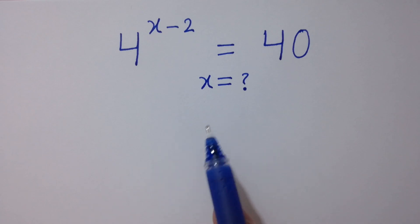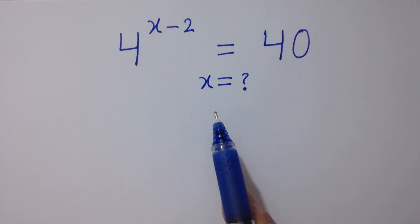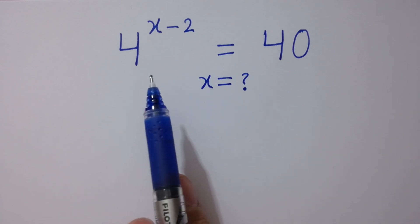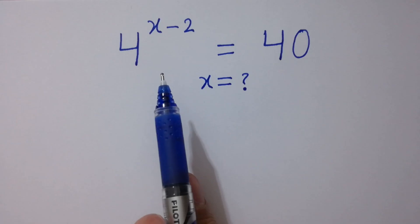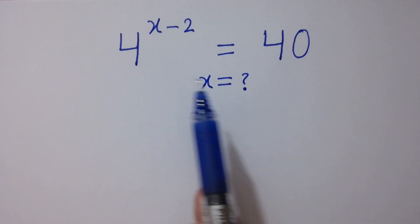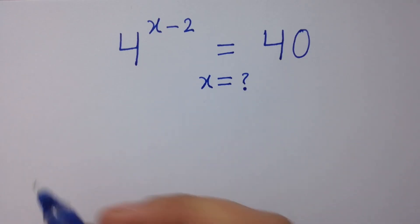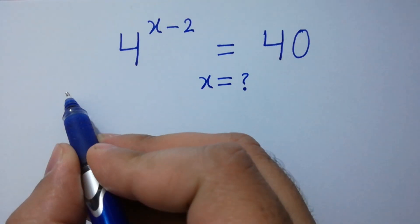Hello friends. Find the value of x if 4 to the power x minus 2 equals 40. Let's have a solution here.